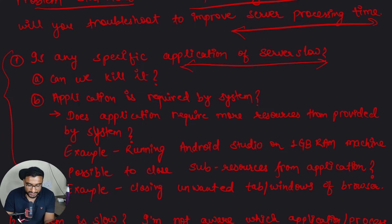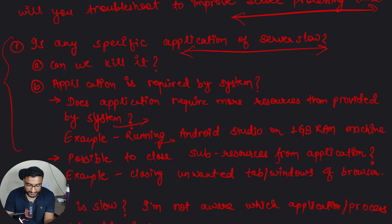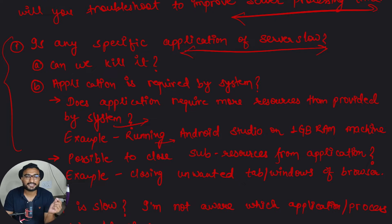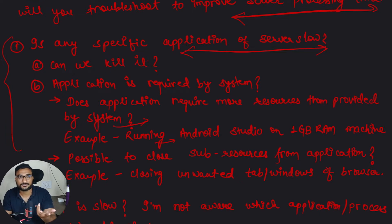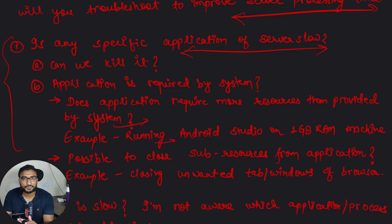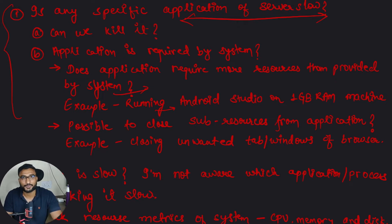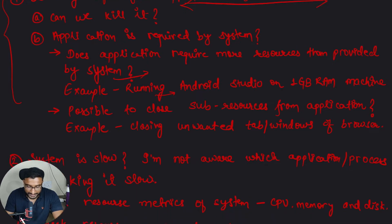If that application is required by the system, check whether it needs more resources than the machine currently provides. If so, the solution is to increase the available resources — for example, upgrading from 1GB to 4GB RAM, or from 8 CPU cores to 16 cores. Whatever bottleneck you are facing — CPU, memory, or disk — you need to increase that resource.